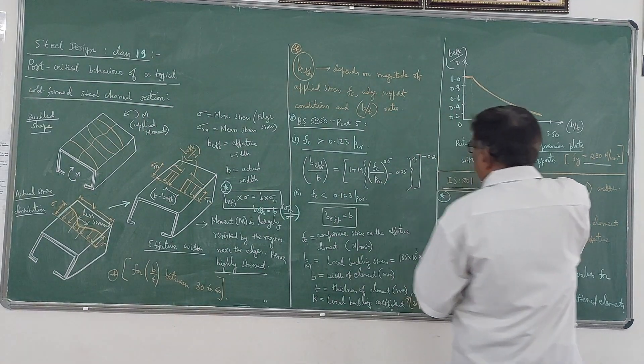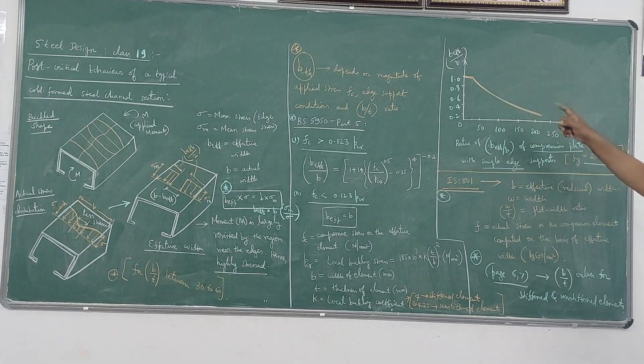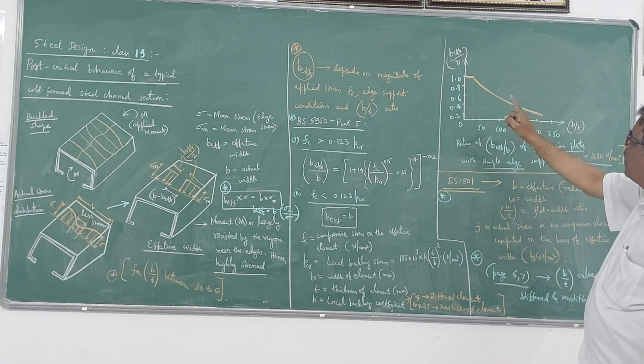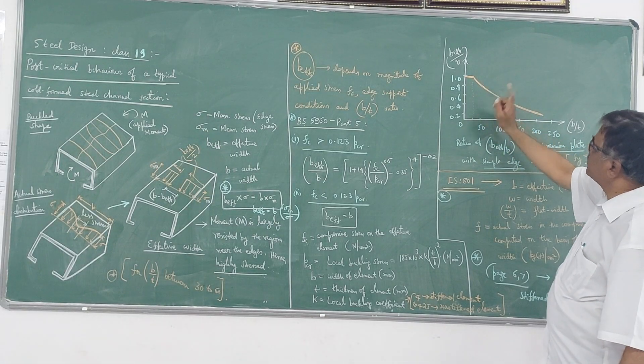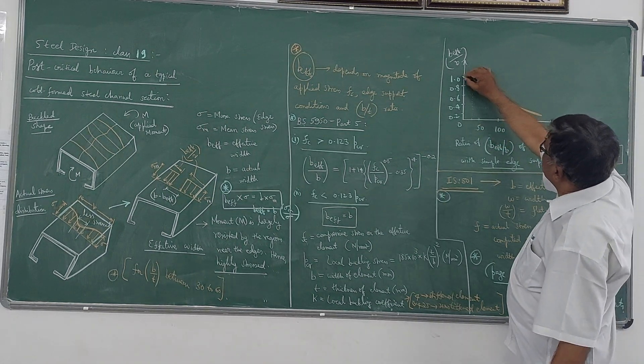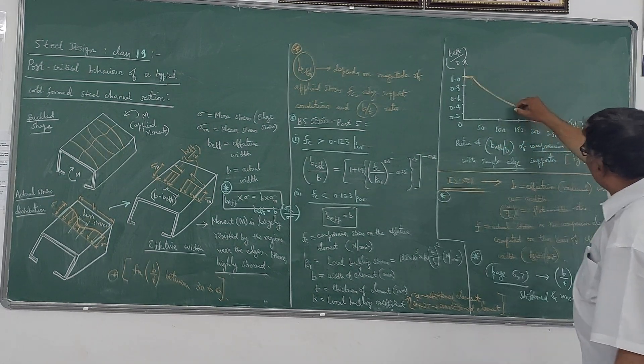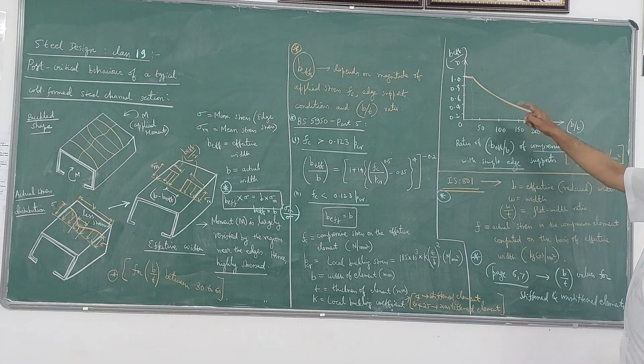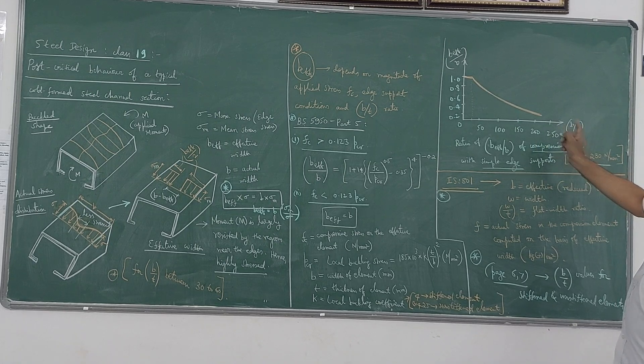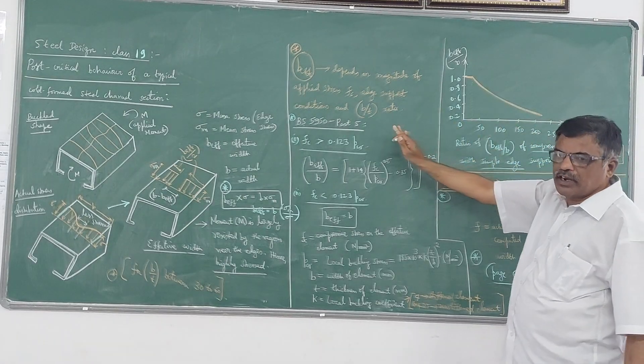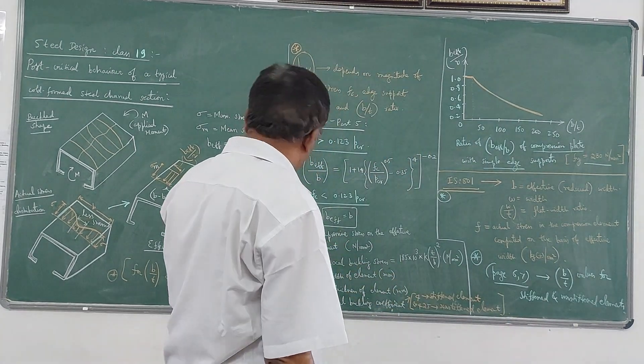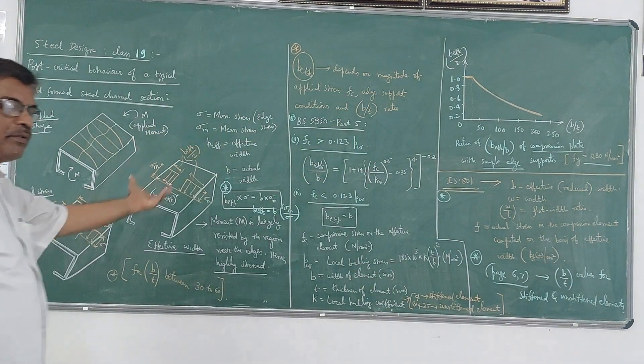Now here if you plot a graph of B_effective by T versus B by T - so both are non-dimensional parameters - you are going to get a graph something like this. So initially it will be straight line, then it decreases. So this B_effective by B value decreases as the value of B by T increases. So this is the explanation for the post-buckling behavior of a thin plate. Now that thin plate is similar to your channel.